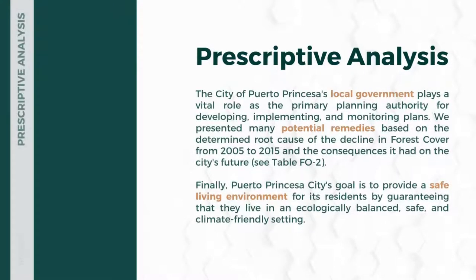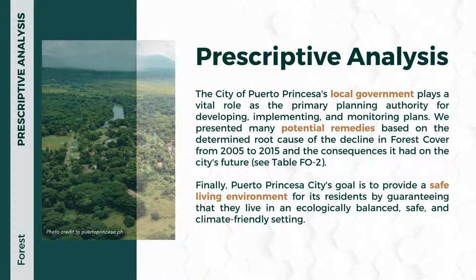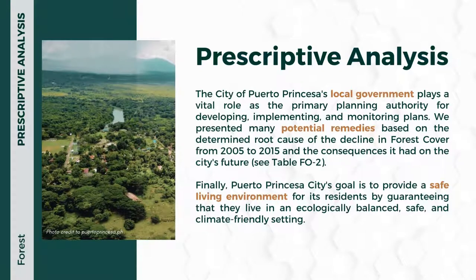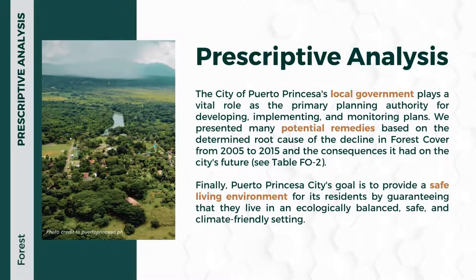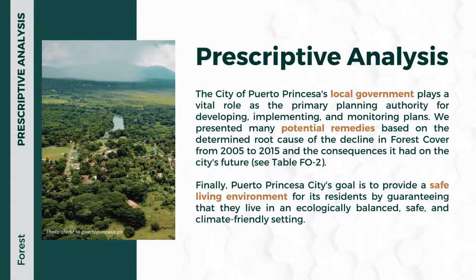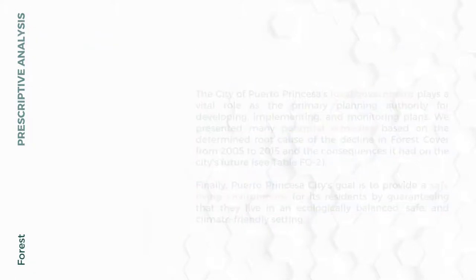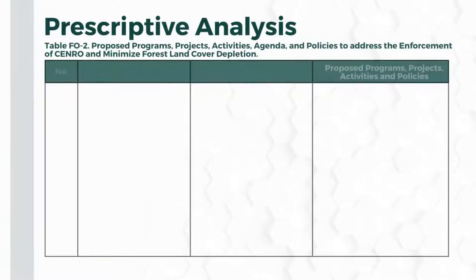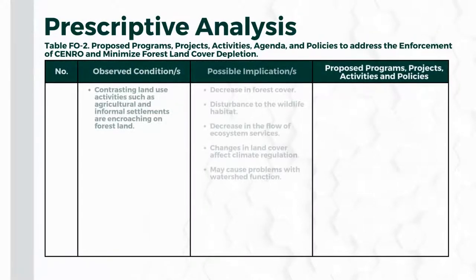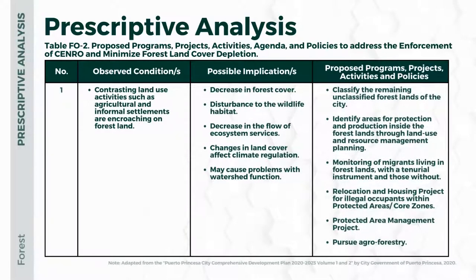Moving on to the prescriptive analysis. The city of Puerto Princesa's local government plays a vital role as the primary planning authority for developing, implementing, and monitoring plans. Puerto Princesa city's goal is to provide a safe living environment by guaranteeing residents live in an ecologically balanced, safe, and climate-friendly setting. The following prescriptive analysis presents proposed programs, projects, activities, and policies to address CENRO enforcement and minimize forest land cover depletion, grouped into four observed conditions.